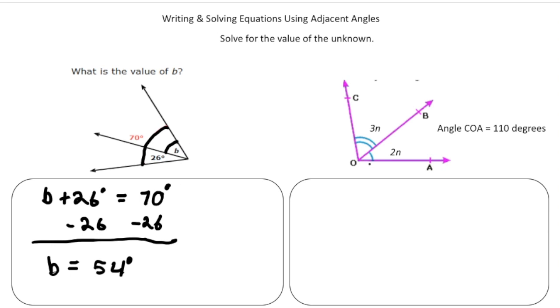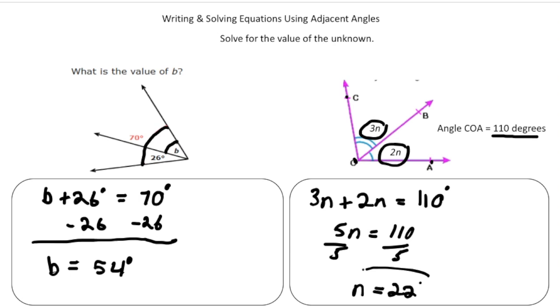This one over here is a little more complex. Again, we have two angles that are adjacent because they share a common side and a vertex. And we know this angle here is 3N and this angle here is 2N. And we know that together they are 110 degrees because it says angle COA, the entire angle is 110 degrees. So we're going to add up 3N and 2N and together it's going to equal 110 degrees. So 3N plus 2N equals 110 degrees. And now we can combine like terms, 3N and 2N is 5N. 5N equals 110. And then divide both sides by 5. And N is going to equal 22. And there's your solution.